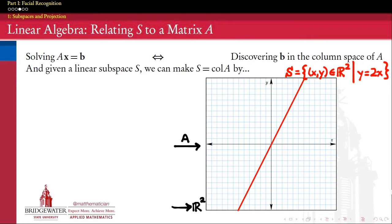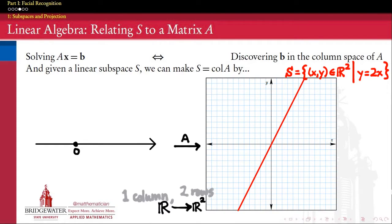Recall that a linear transformation from one vector space to another is what we represent with a matrix. If the codomain of our matrix A is R2 and the range of A is S — the column space — then we'd like to cast R2 as the codomain of this linear transformation and then decide what the domain should be. Because our column space here is one-dimensional, we know that our domain has to at least be one-dimensional in order to span all of the vectors in the column space.